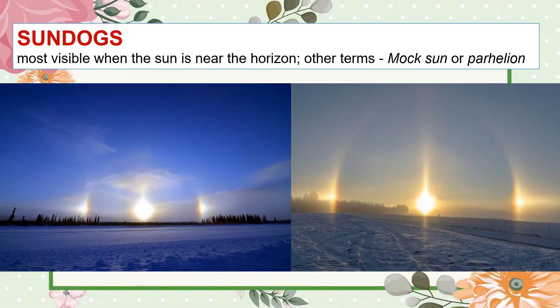Sun dogs have the same mechanism as the formation of halos; however, they are most visible when the sun is near the horizon. As light enters the face side of the hexagonal ice crystals, light exits at 22 degrees on the other side. Mock sun or parhelion are the other terms for sun dogs.